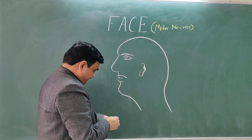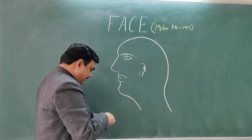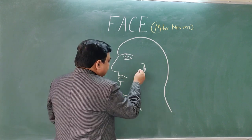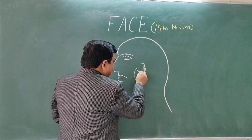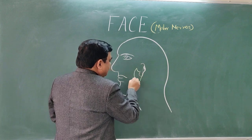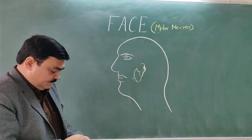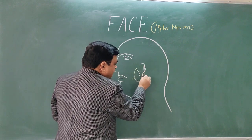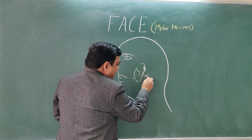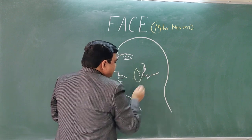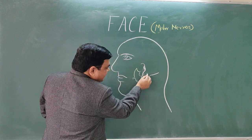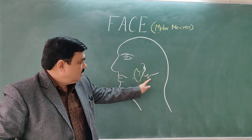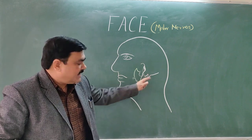Here is the position of the parotid gland. This is the parotid gland. Here is the mastoid process and this is the styloid process. Between these two processes there is a foramen — this is the stylomastoid foramen.